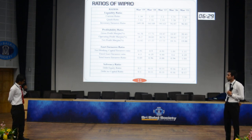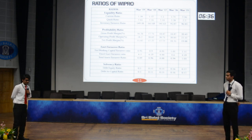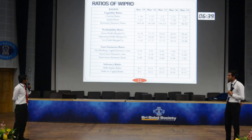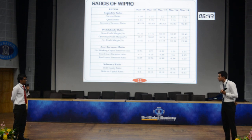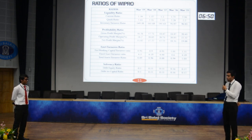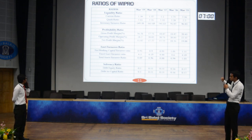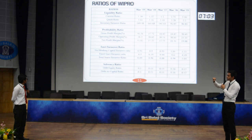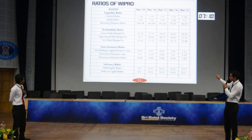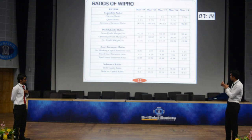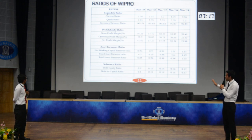The profitability ratio tells us about the total calculation of income and all the different expenses. Gross profit margin percentage shows us total profit without deducting sales. Net profit margin percentage shows us the total profit the company is currently earning, excluding all different taxes.